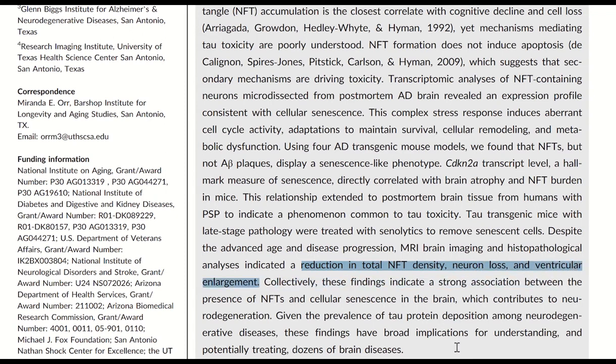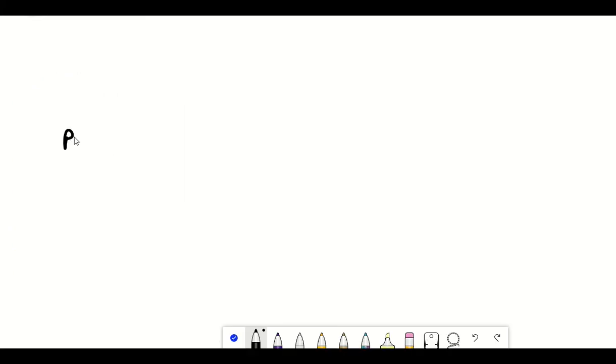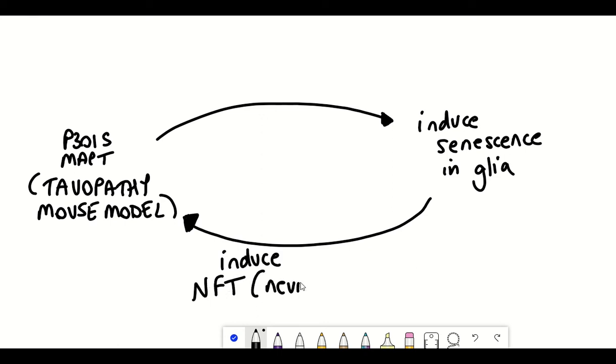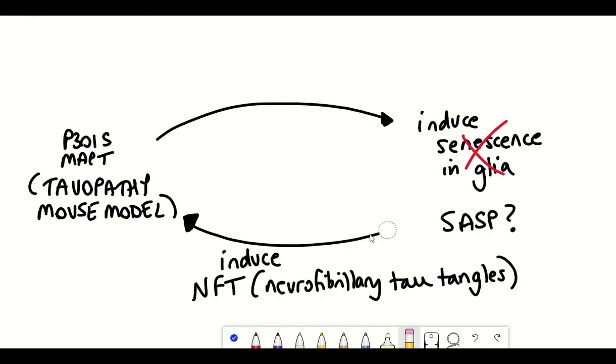Both papers show evidence of removing senescent cells and reducing the Alzheimer's disease pathology, suggesting that senescent cells are a cause of the pathology. But especially in this last paper it also suggests that the presence of Alzheimer's disease pathology can also potentially induce the further production of senescent cells.